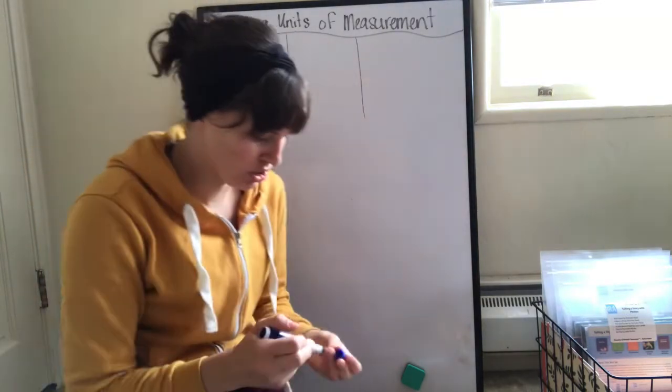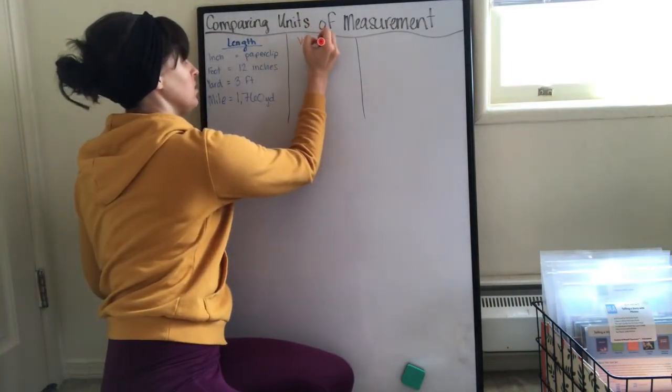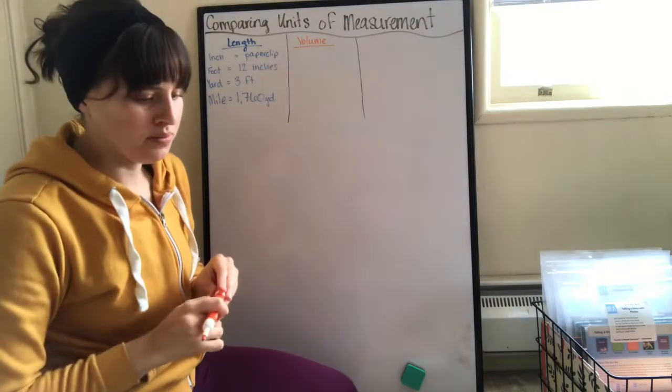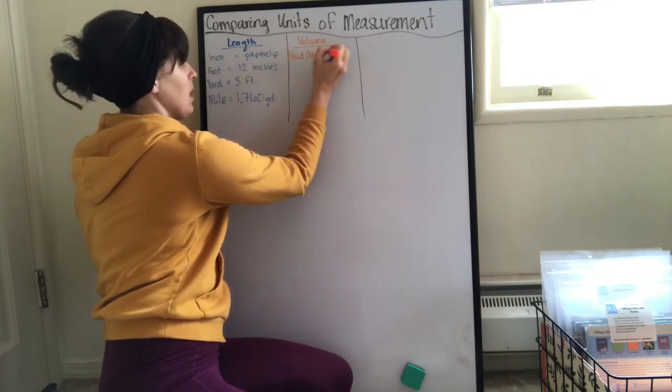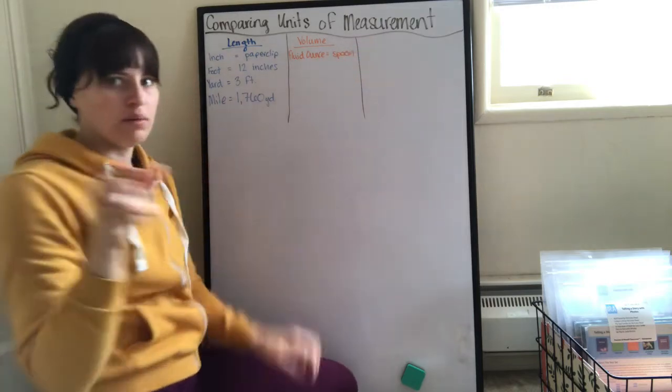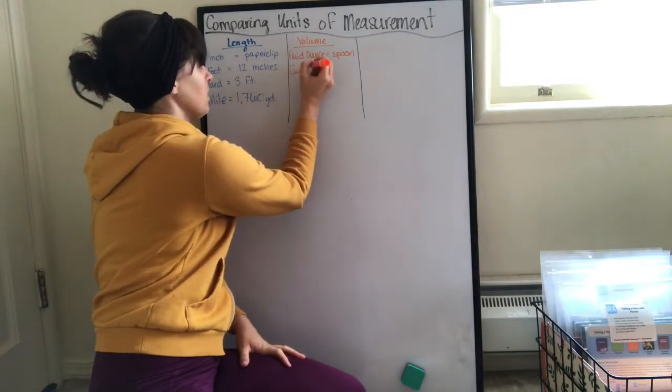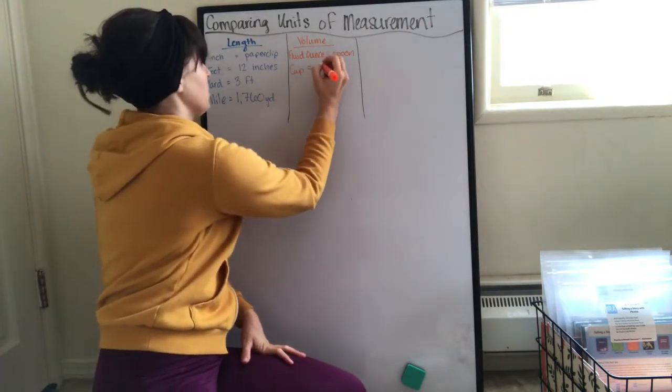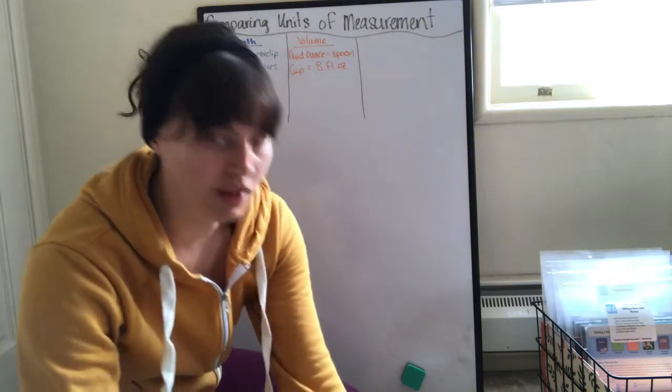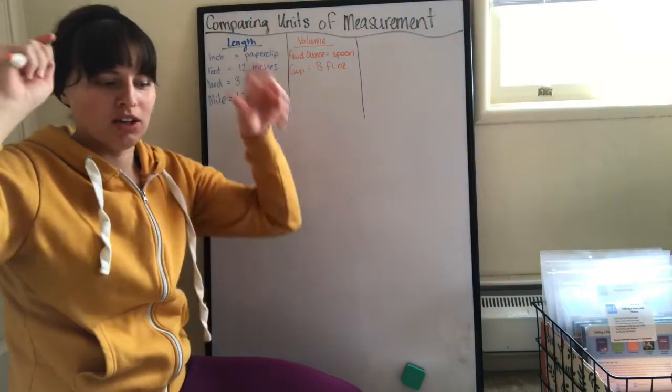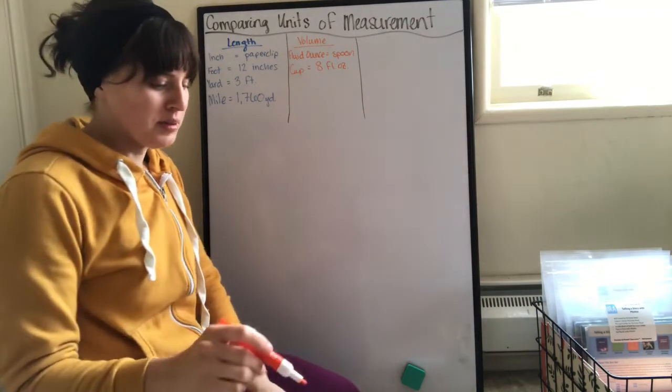Next we're going to do volume. Now we're talking about liquid. Remember we had fluid ounce, and that was about a spoonful, about the amount you can have in a spoon. Then one cup, one cup is eight ounces. Remember we had that big G with the Qs and Ps and Cs.